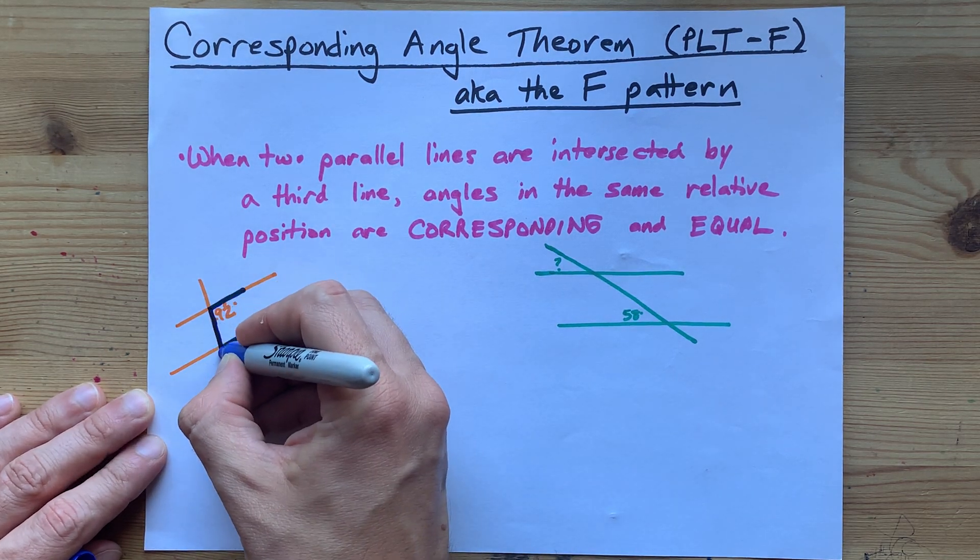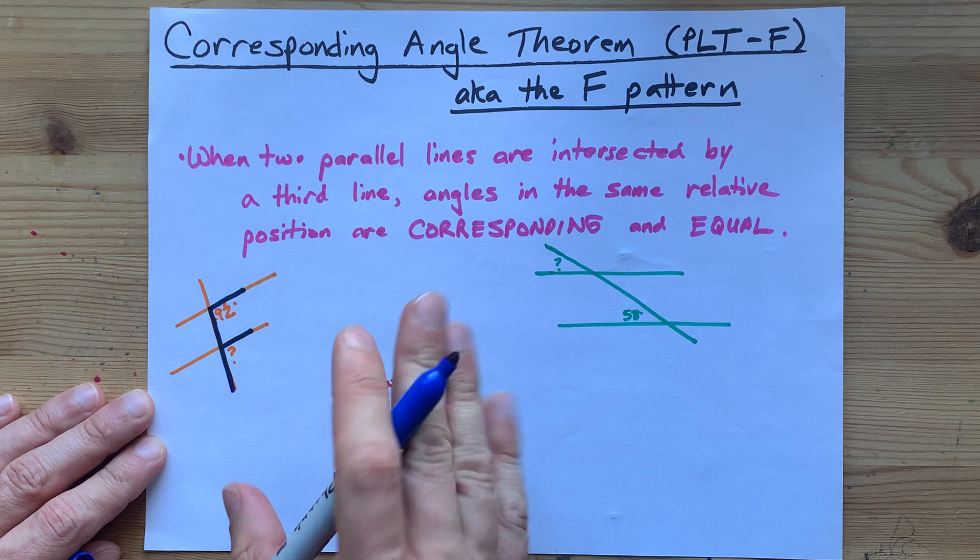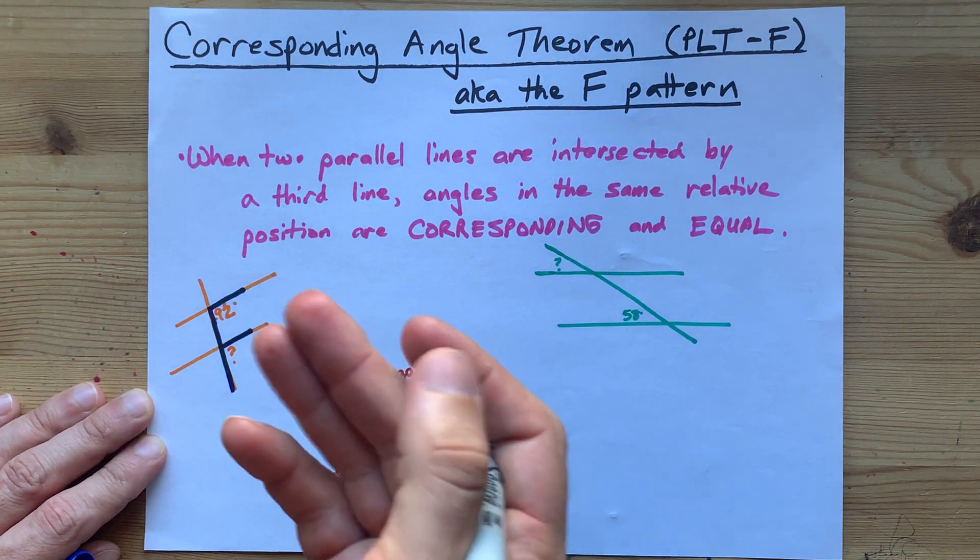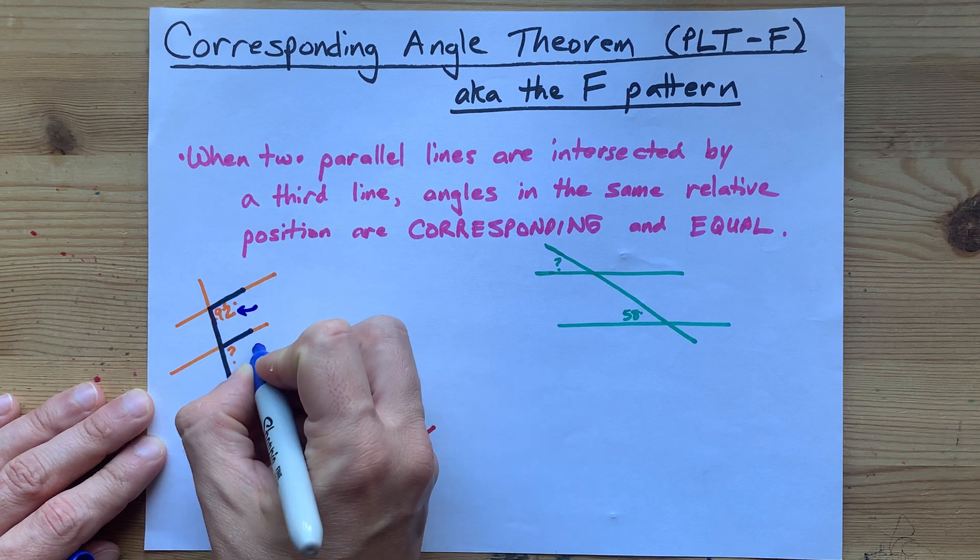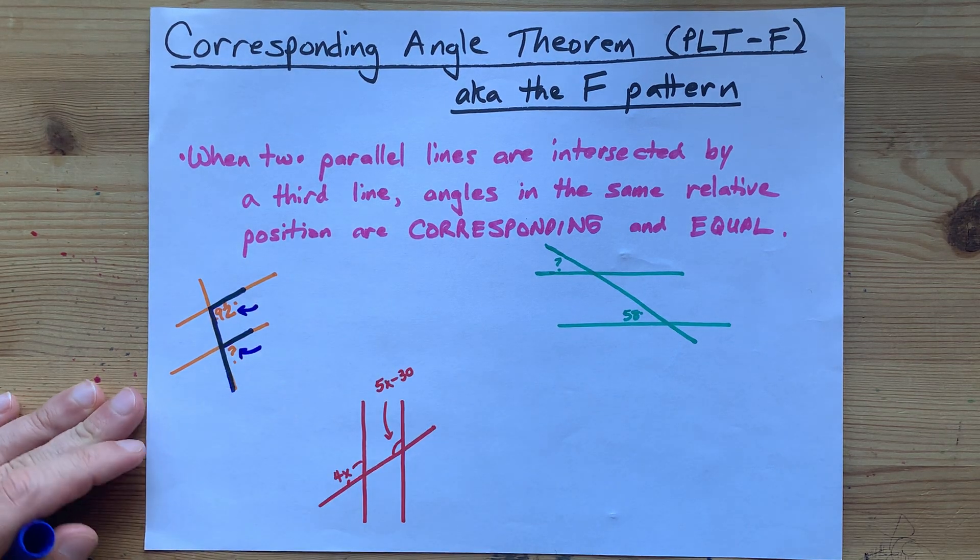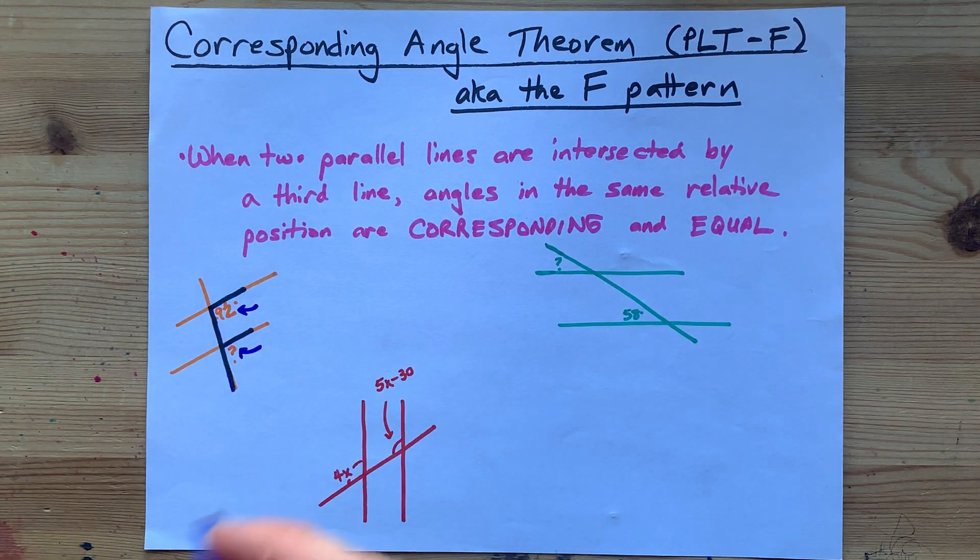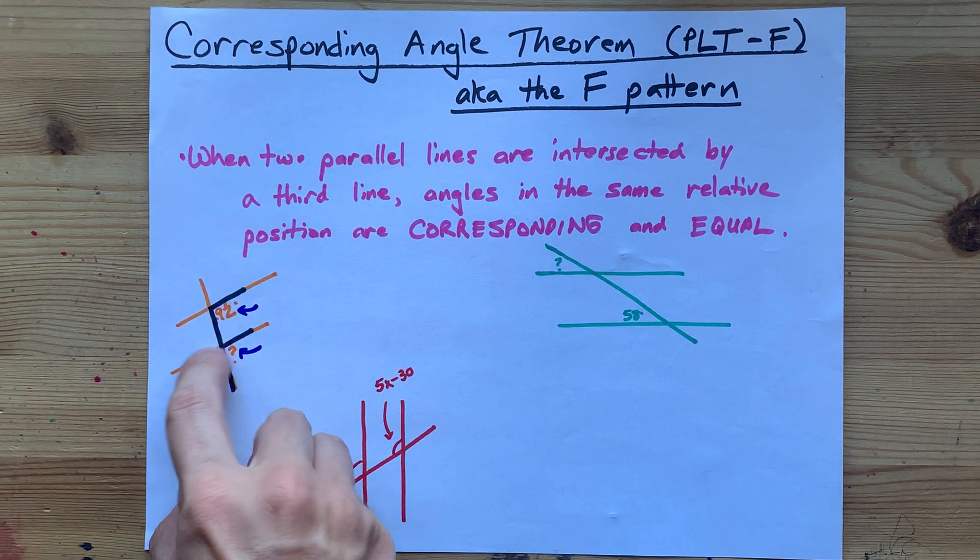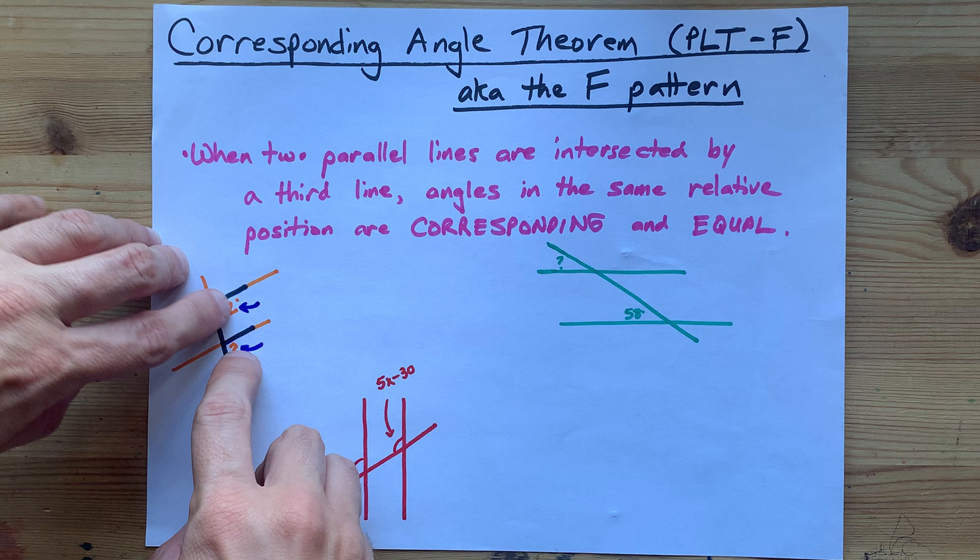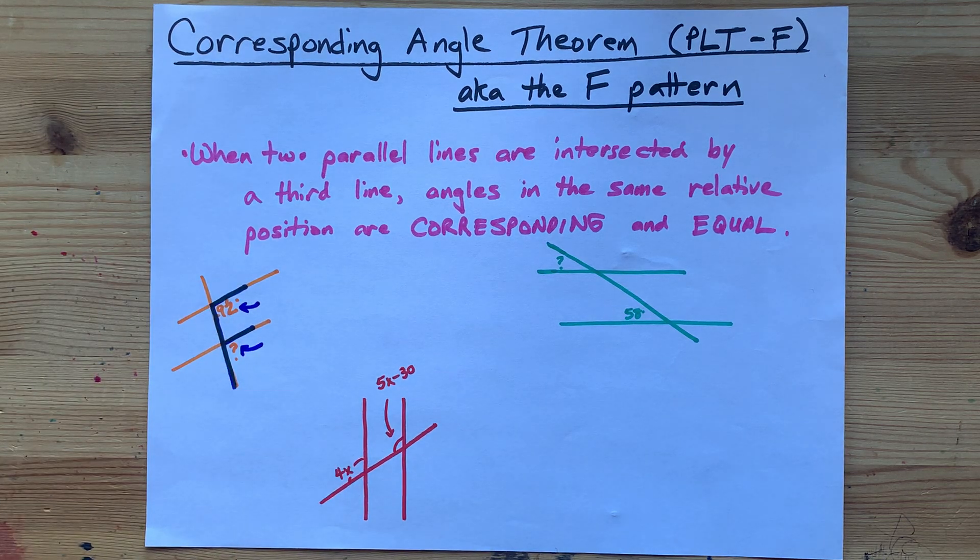Now, I know that corresponding angles use the inner corners of the F most often. So, I'm going to point to the two angles that are in the same relative position. What I mean by that is that you have a little cross here and a little cross here and both of these angles are in the bottom right-hand corner of their respective cross.